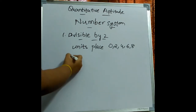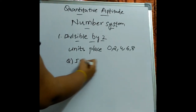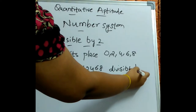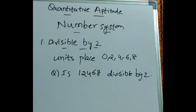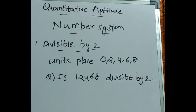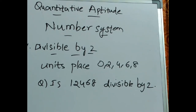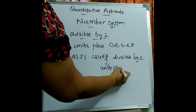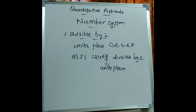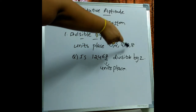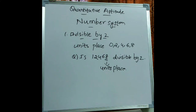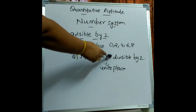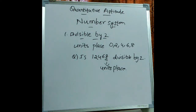For example, the question is: is 12,468 divisible by 2? We know the last digit is the units place. If the units place of the number has any of the digits 0, 2, 4, 6, or 8, then the number is divisible by 2. The units place of 12,468 is 8, so the number is divisible by 2, and we can easily solve the problem.